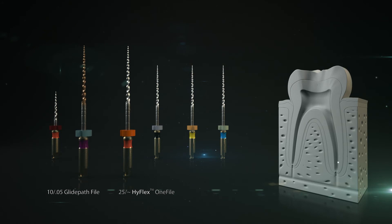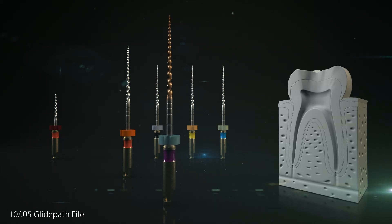Step 1: A 10 over .05 glide path file is used to create a mechanical glide path. The file is used up to its full working length with a pecking motion advancing without pressure. If there is noticeable resistance, the dentist checks the patency with a 20 over .02 manual file.